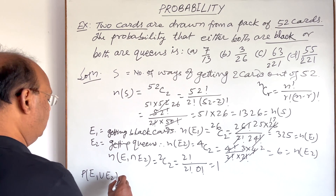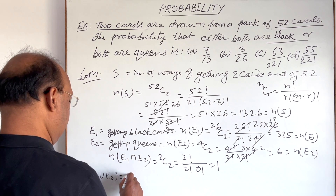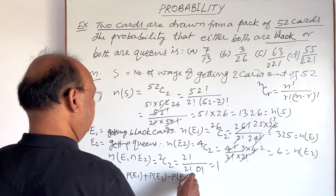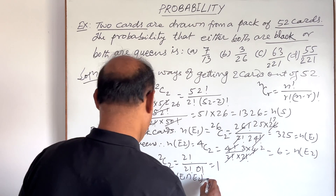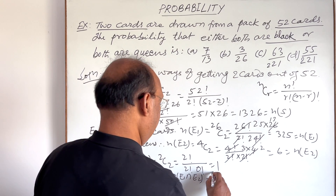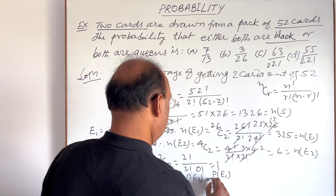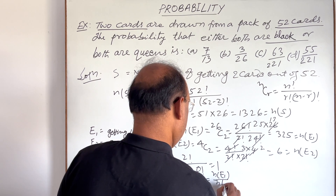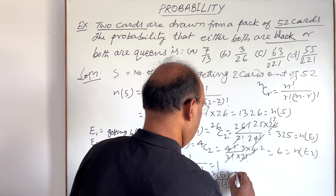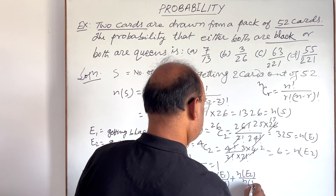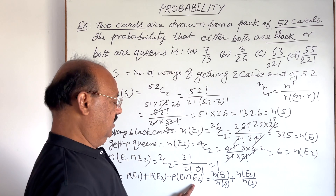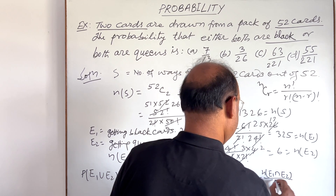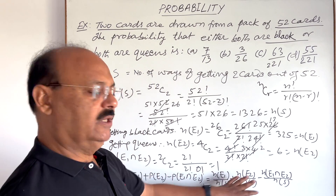Now we have to find the probability of E1 union E2, meaning the cards are either black or queens. We use the addition formula: P(E1 ∪ E2) = P(E1) + P(E2) − P(E1 ∩ E2). Each probability is calculated as its favorable outcomes divided by n(S), which is 1326.